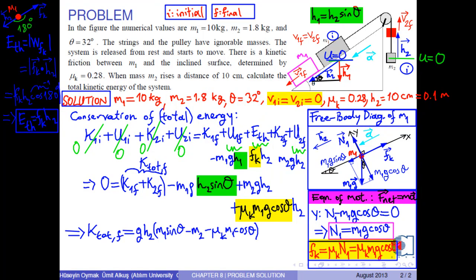Finally, a simple rearrangement gives us the final total kinetic energy is g times h2 times m1 times sin theta minus m2 minus mu k times m1 times cos theta.